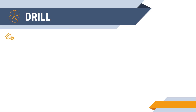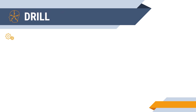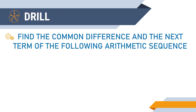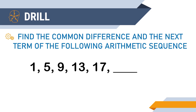But before we proceed with our topic, let's have a drill! Find the common difference and the next term of the following arithmetic sequence. Let's have 1, 5, 9, 13, 17.